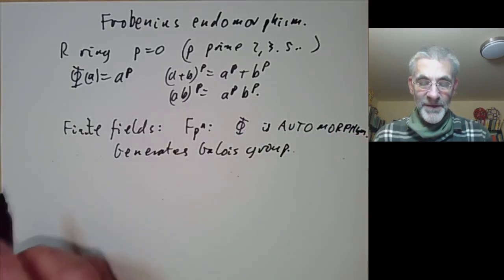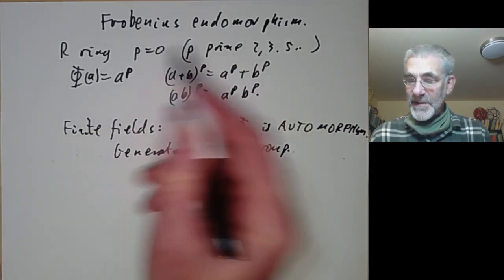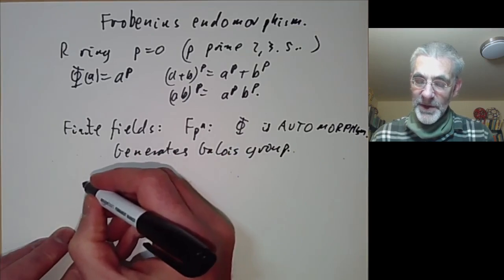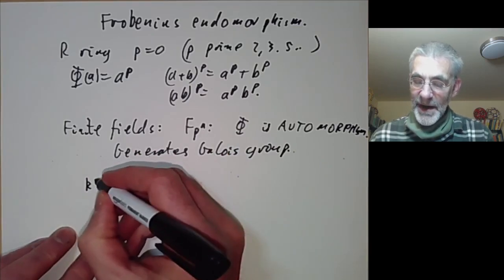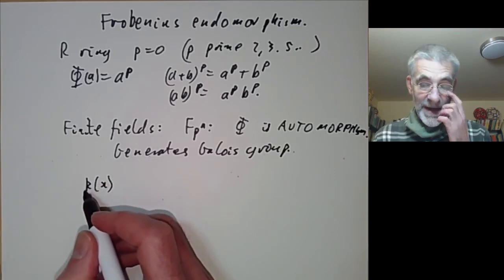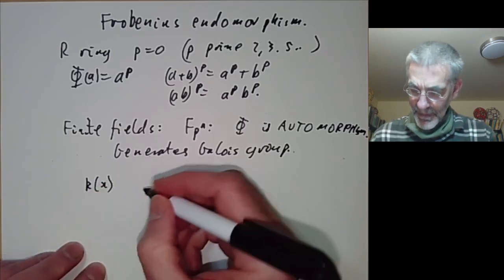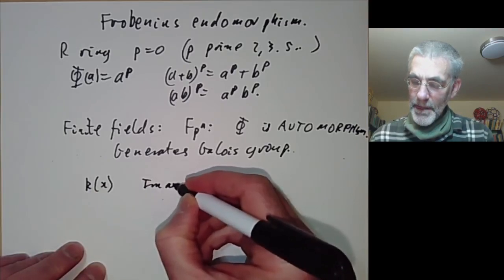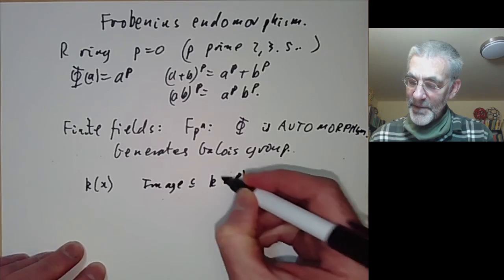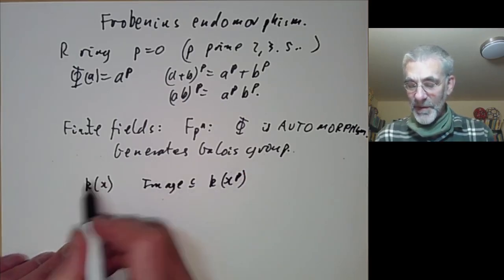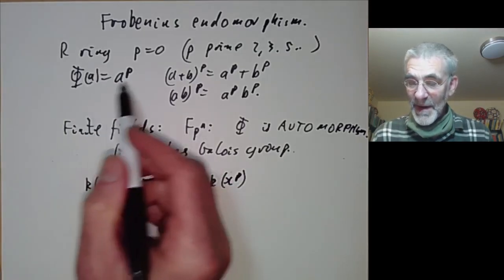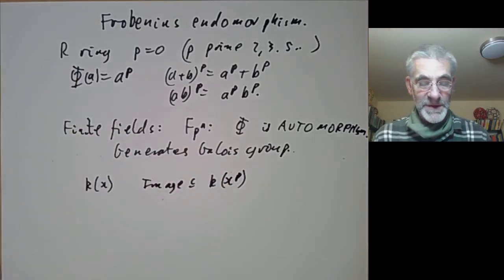For general rings or even fields, the Frobenius map need not be an automorphism. For instance, if you look at the field K(X) for some field K of characteristic P, then the image is contained in K(X^P), which is definitely smaller than K(X). So this map is not, in general, an automorphism of a field.